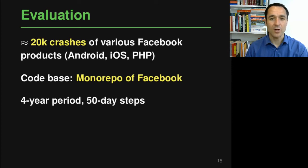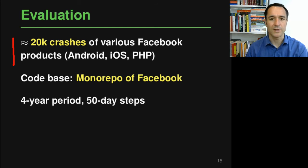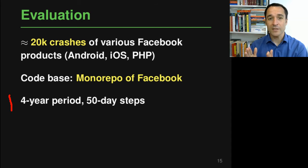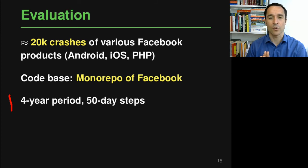We evaluate Scaffle on a set of about 20,000 crashes that have occurred in various Facebook products running on Android, iOS and also on the server side where it's mostly PHP code. As the codebase we consider the mono repository that Facebook uses to host almost all of its code — a huge repository containing millions of code files written in many different languages. The data was gathered over a four-year period. We split this period into 50-day steps, using all crashes up to a given point as training data and evaluating on the crashes that occur in the next 50 days.